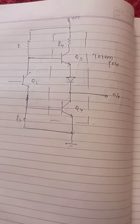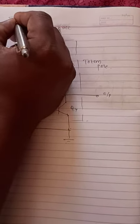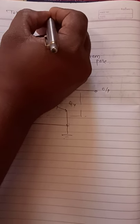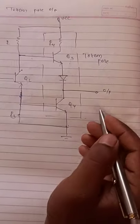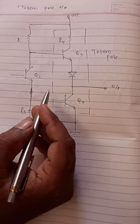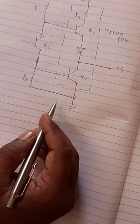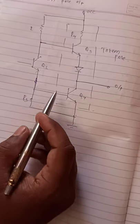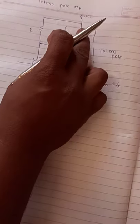Today's actual point is totem pole output. This is the actual diagram of totem pole output. We already seen it in two input NAND gate, but we are taking here only the totem pole arrangement.